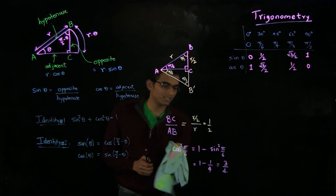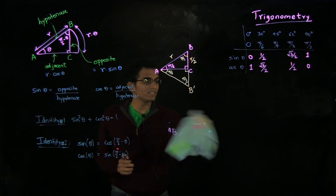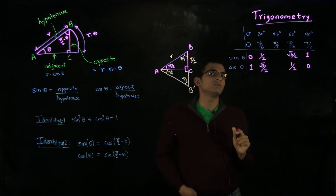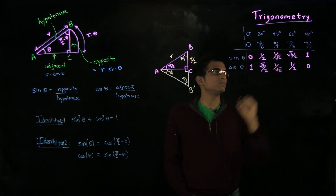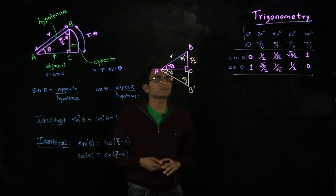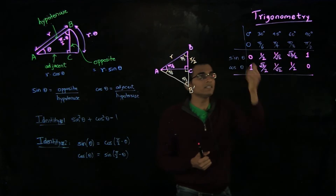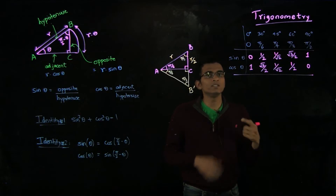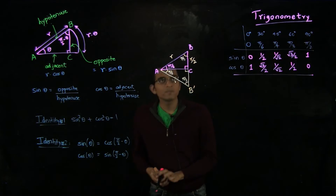Similarly, it is an easy exercise to compute the sines and cosines of Pi by 4. I will leave it for you to work out, but the answer is 1 over square root 2 for both sine and cosine. These sines and cosines of basic angles are good to remember so that you can quickly use them when solving problems.